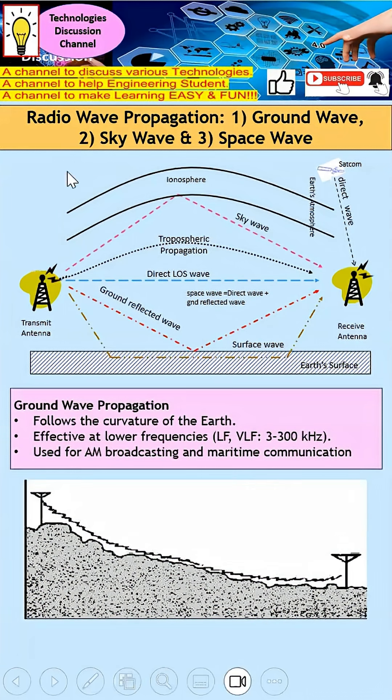I'd like to explain how radio waves actually propagate. There are mainly three ways: ground wave, sky wave, and space wave.